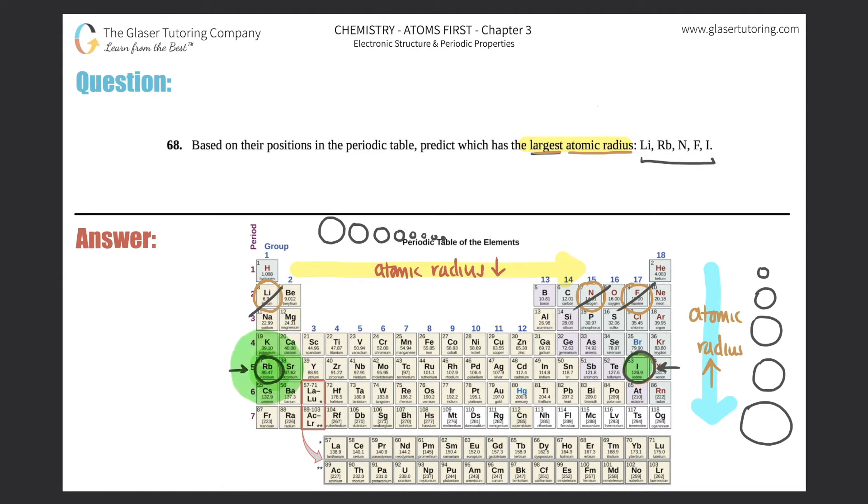Which one would be larger out of rubidium and iodine? Rubidium would be much larger as opposed to just little itty bitty iodine. So rubidium would actually be the largest atomic radius. You could circle Rb. Rb would be the biggest one.